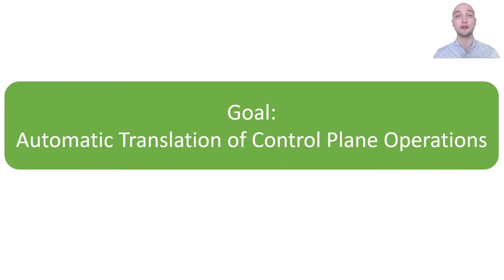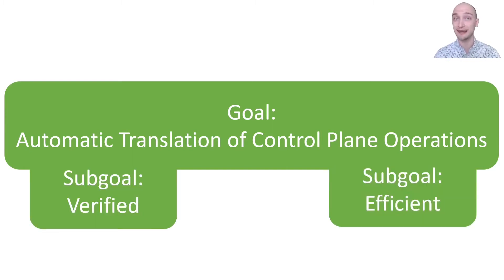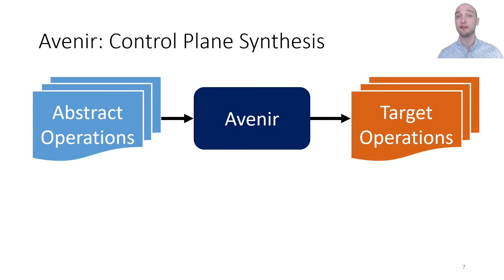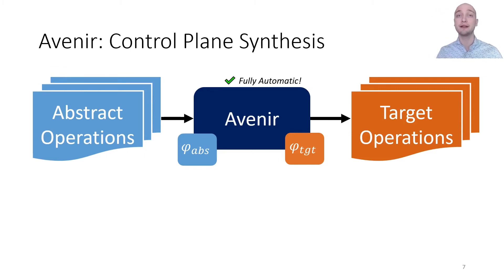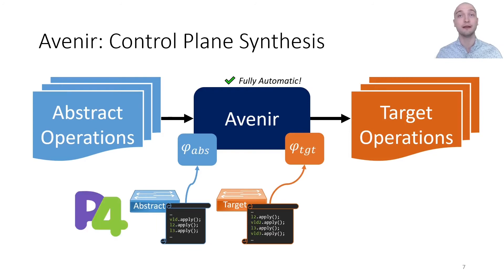As secondary goals, we want our engine to be verified to eliminate subtle bugs, and we want our engine to be efficient to avoid prohibitive performance overheads. To this end, we've developed Avenir, which uses a technique called control plane synthesis to translate abstract operations on abstract pipelines to equivalent operations on the target pipeline in a fully automatic way. Simply pass formal descriptions of the abstract and target programs, and Avenir will automate the rest. When people hear formal specification, they tend to panic because they imagine writing involved first-order logic specifications. However, Avenir uses well-studied PL techniques to compute efficient logical formulae from imperative data plane programs written in P4.